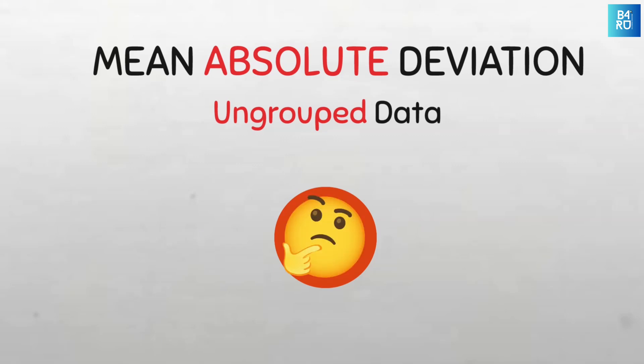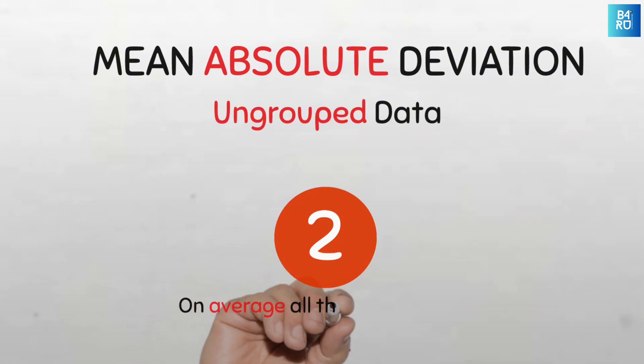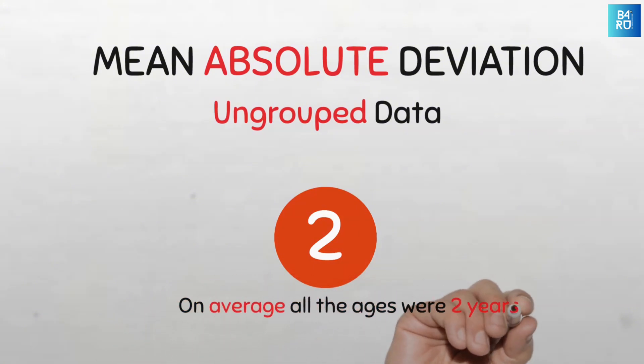So what does a mean absolute deviation of 2 imply? It implies that on average, all the ages of the children on that day were 2 years from the mean age of the data.